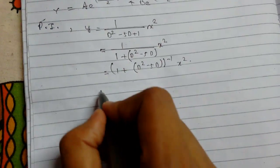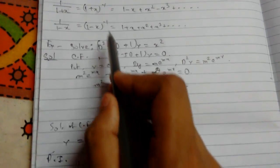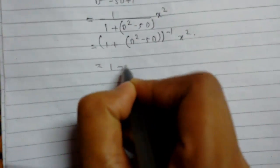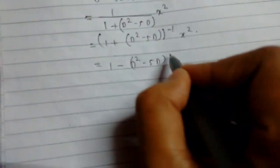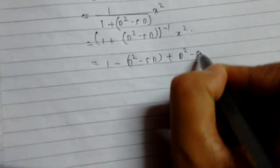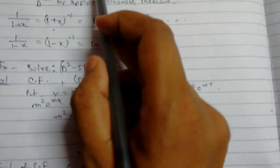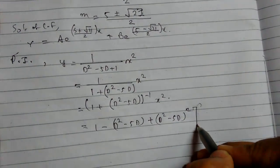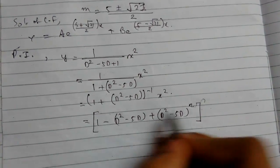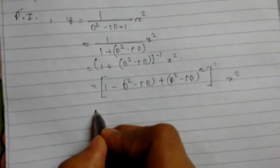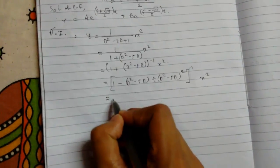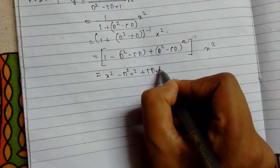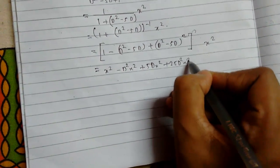Now we apply the binomial expansion. This becomes [1 - (D² - 5D) + (D² - 5D)² - ...] times x². Since x is to the power m equals 2, we expand only up to D², after which all terms become zero. Expanding gives: x² minus D²(x²) plus 5D(x²) plus 25D²(x²).